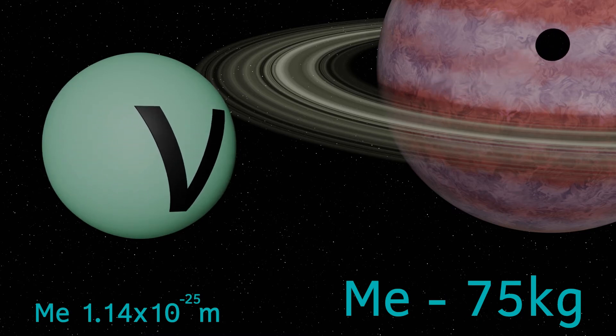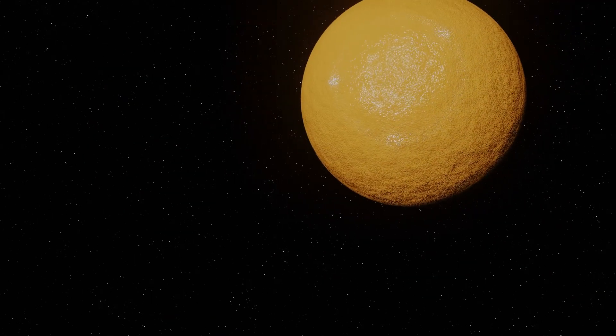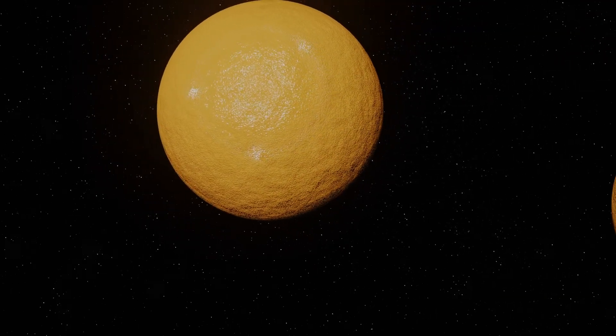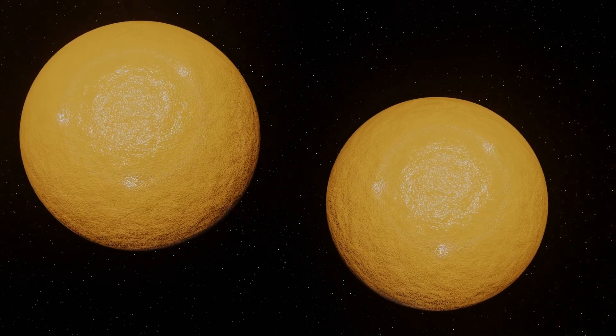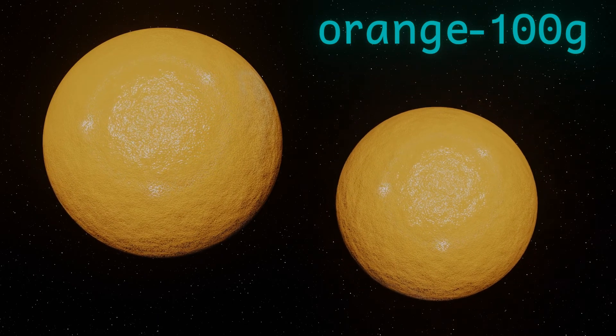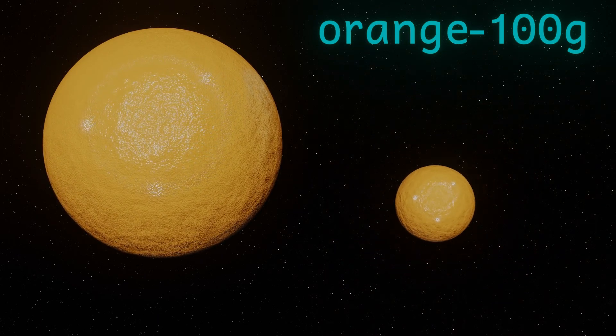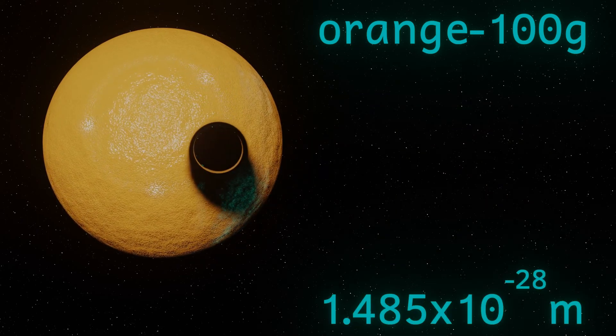We're not finished there though, I'm sure we can go smaller than that. And for no other reason than I've made an orange model for my last video and never used it, let's see what the Schwarzschild radius for an orange would be. Here I'm going to assume that an orange has a mass of 100 grams or 0.1 kilograms